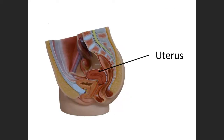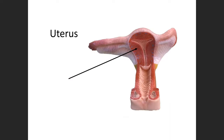Here on this model there's the uterus — posterior, a little bit more superior. If you've been pregnant and had a child, as the baby gets bigger the uterus gets bigger and it presses and pushes down on the bladder. That's why pregnant moms in later trimesters have to go to the bathroom frequently, because that bladder is constantly being pressured by their baby.